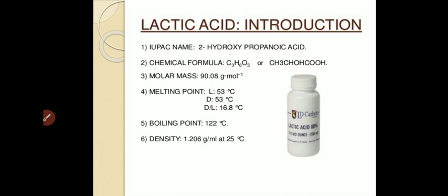The melting point of lactic acid varies according to the composition of D and L-lactic acid. L-lactic acid has a melting point of 53 degrees Celsius, and D-lactic acid also has a melting point of 53 degrees Celsius. However, for a mixture of D and L-lactic acid, it varies with composition from 16.8 degrees Celsius to 33 degrees Celsius. The boiling point of lactic acid is quite high, near about 122 degrees Celsius.